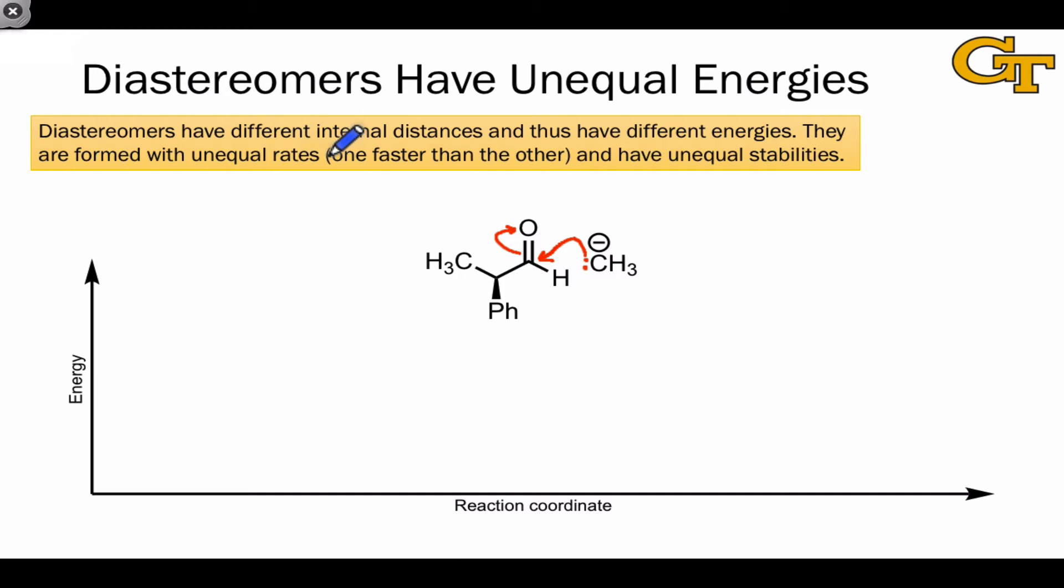Because diastereomers have different internal distances between their atoms, they have different energies. Reaction pathways that could create a pair of diastereomers, then, will occur with unequal rates, leading to a preference for one diastereomer over the other. And the resulting diastereomers will also have unequal thermodynamic stabilities. This is the same as saying that they have different free energies. This means that diastereomeric mechanisms are not the same energetically.